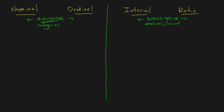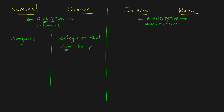Nominal and ordinal are both categories. But what distinguishes one from the other? Nominal are purely just categories, whereas ordinal data is made up of categories that can be put into order.